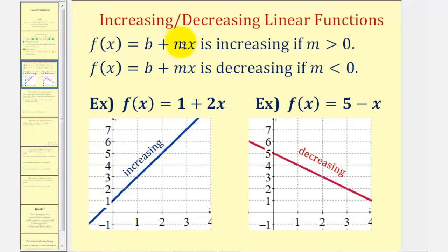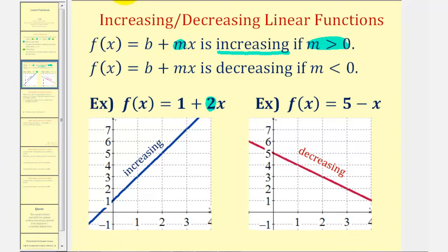If m, the slope of the linear function, is positive or greater than zero, then we say the function is increasing. For example, looking at the function f(x) = 1 + 2x, notice the slope is positive two, which means the function is increasing. Looking at the graph of the line, as we move from left to right the line is going up, and therefore the function is increasing. We can also say: as x increases, so does y.